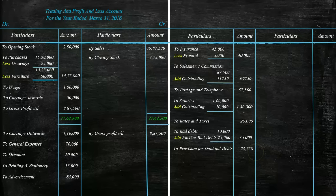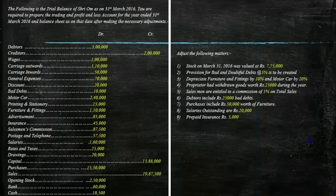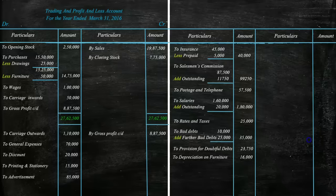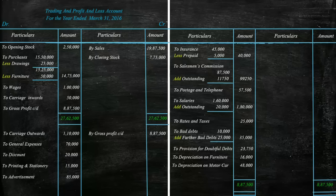All indirect expenses are now recorded on the debit side of the profit and loss account. There are no indirect incomes in this question, so the credit side only includes gross profit carried down of Rs. 8,87,500. Calculating both sides, the credit side is more. To balance, we record the difference on the debit side as net profit of Rs. 62,875, which is the balancing amount between the credit and debit sides.